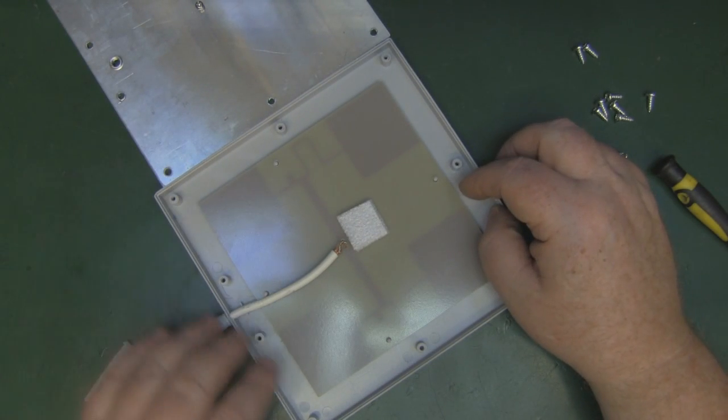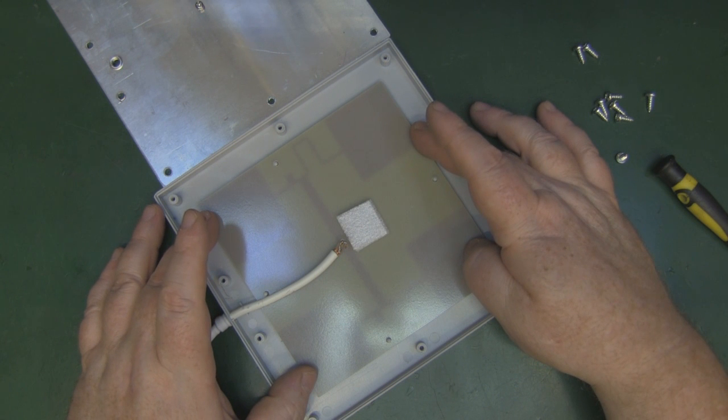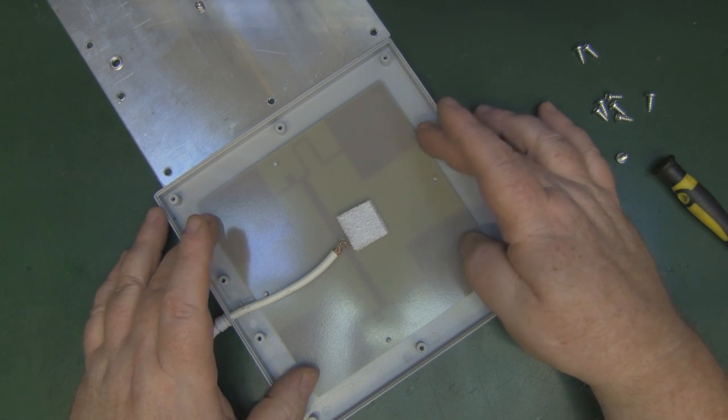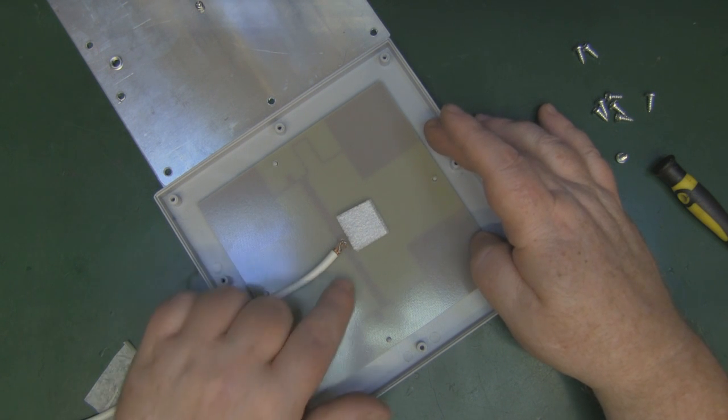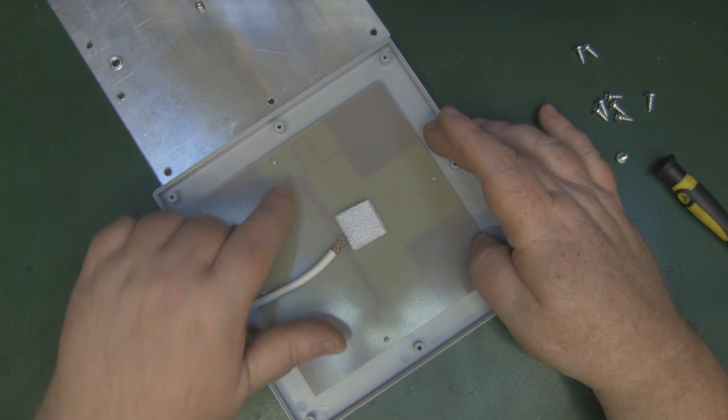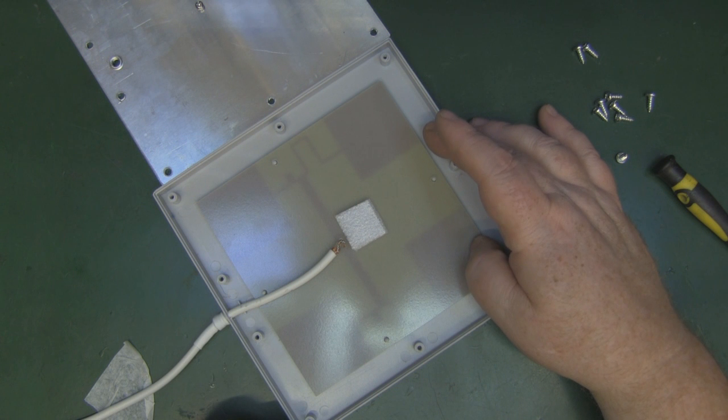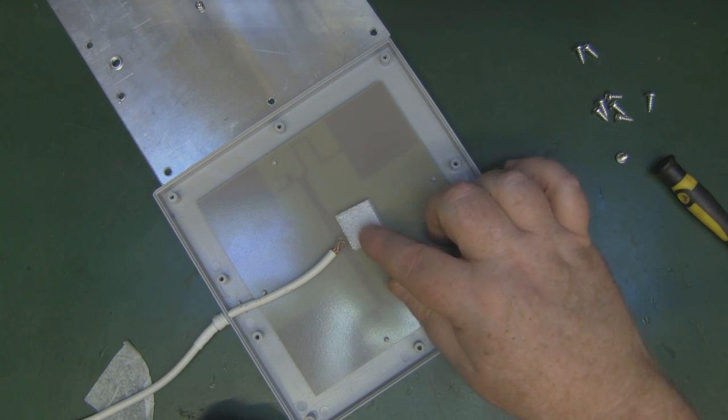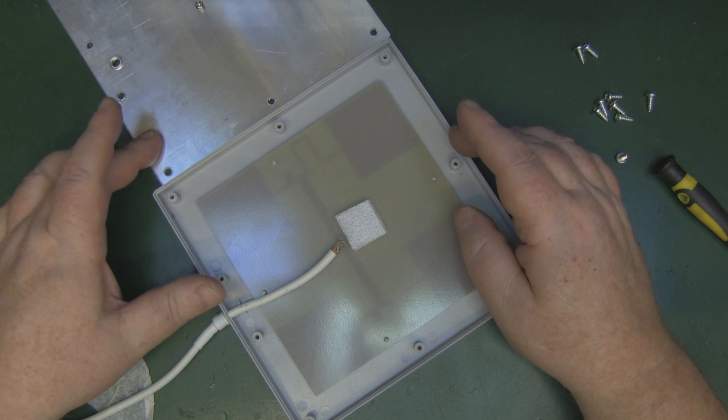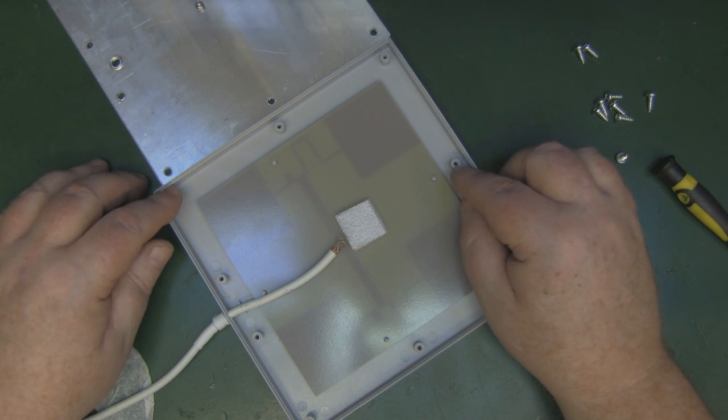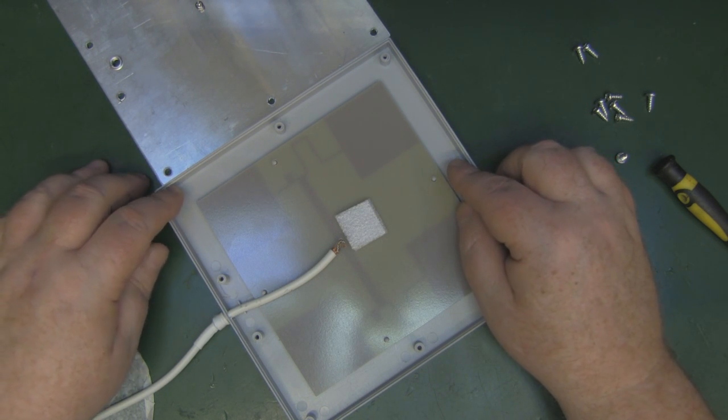As for the driven element then, we've got the four driven elements squares here in the corners. It's just a typical panel antenna. We've got the transmission lines going off to the two pairs here. We've also got this foam in the middle.